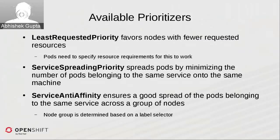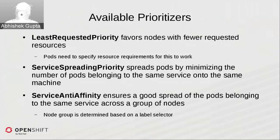The second is Service Spreading Priority. This ensures a good spread of pods belonging to the same service among available nodes in the system — specifically the filtered nodes that have passed through the first phase.